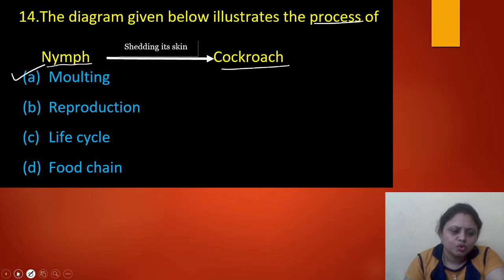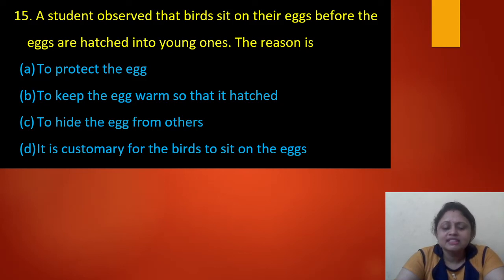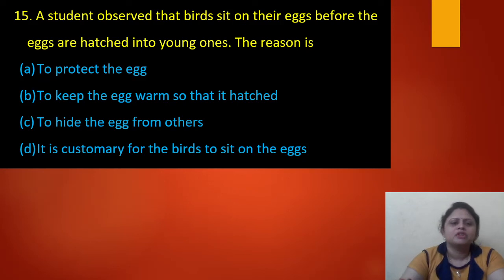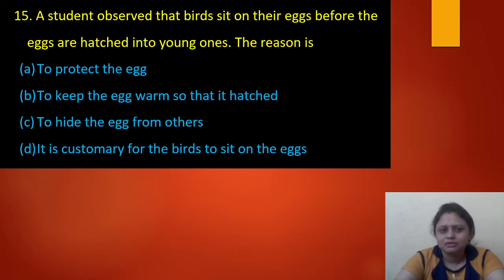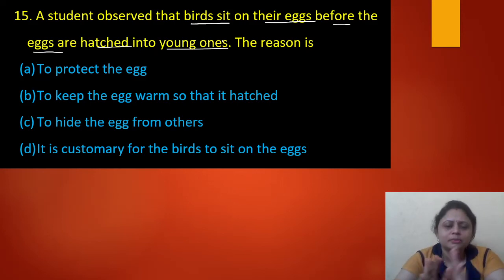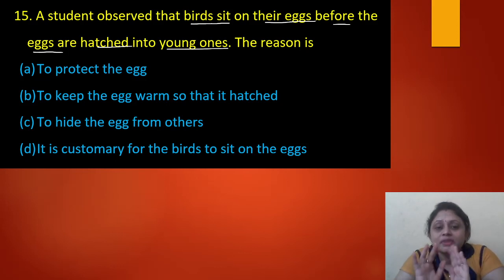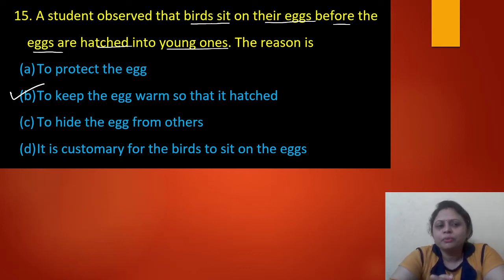Last question: a student observes that birds sit on their eggs before the eggs are hatched into young ones. The reason is — option A: to protect the egg. Option B: to keep the egg warm so that it hatches. Option C: to hide the egg from others. Option D: it is customary for birds to sit on eggs. Birds sit on their eggs to keep them warm, and warmth helps the egg hatch. So the correct answer is option B — to keep the egg warm so that it hatches.